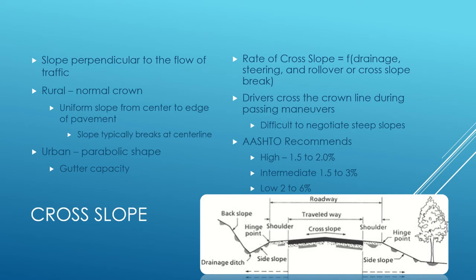Cross slope is the slope applied so water can drain off the road quickly, since water can create hydroplaning. In a rural section it's typically a normal crown — a centerline with slopes breaking each side. In an urban section it's typically a parabolic shape, which has a curve to it that slows the water enough to bring it to the gutters while still shedding water off, similar to a straight break slope on a rural section.